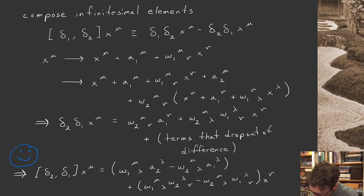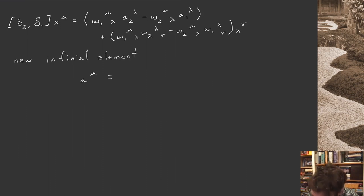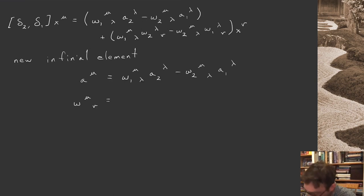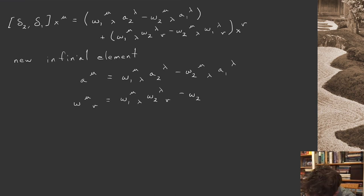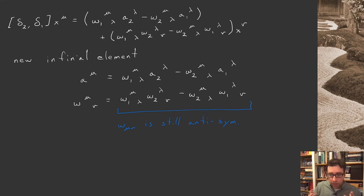From the happy face equation, we can read off the new infinitesimal element under composition. There's a new translation — which is the composition of a Lorentz boost with the old translation — and a new Lorentz generator omega_{μν} = omega_1^μ_λ omega_2^λ_ν minus omega_2^μ_λ omega_1^λ_ν. Note that this new omega_{μν} is still antisymmetric, which was our condition for generating Poincaré — and it is indeed preserved under composition.